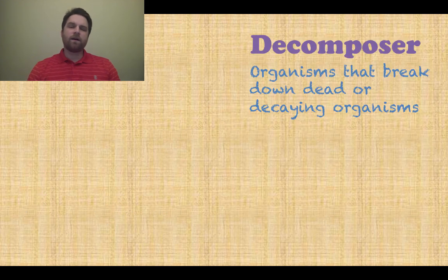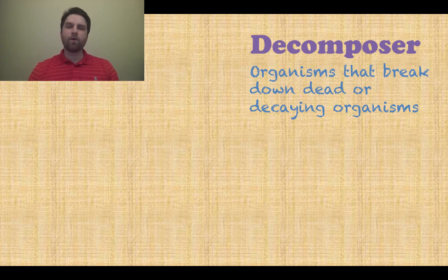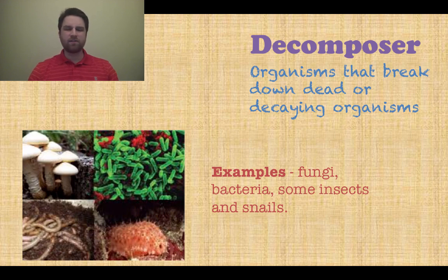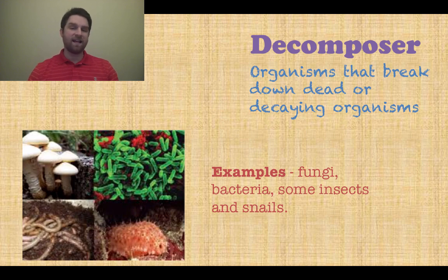The next type of organism we have are called decomposers. These are organisms that break down dead or decaying organisms. Examples include bacteria, fungi, insects, and certain types of snails. Decomposers only break down stuff that's already dead or decaying.